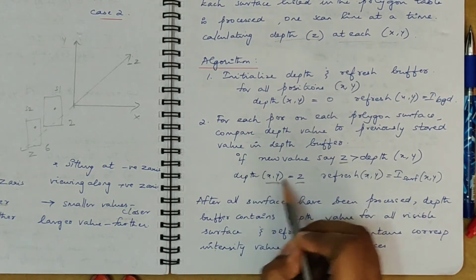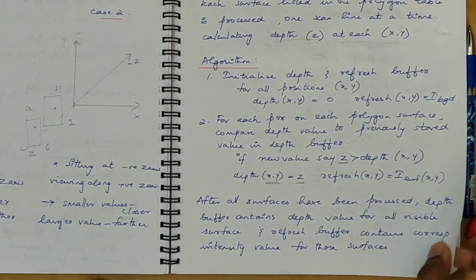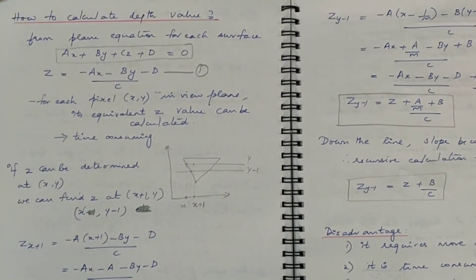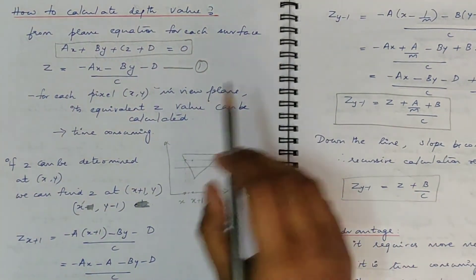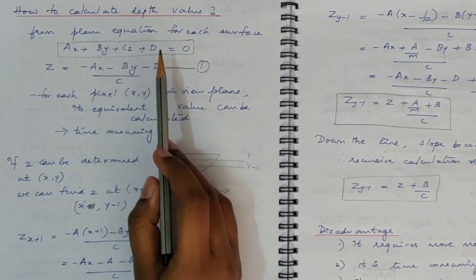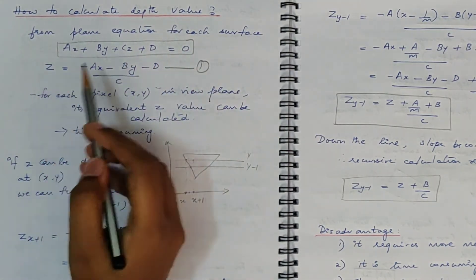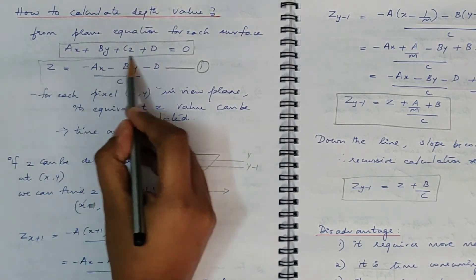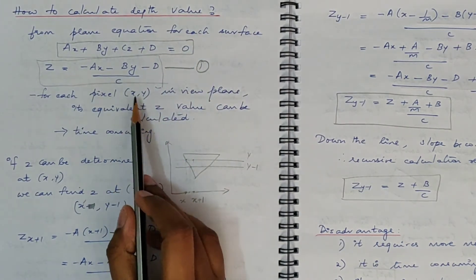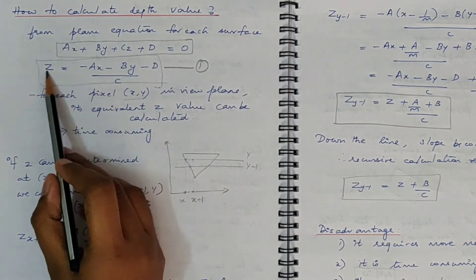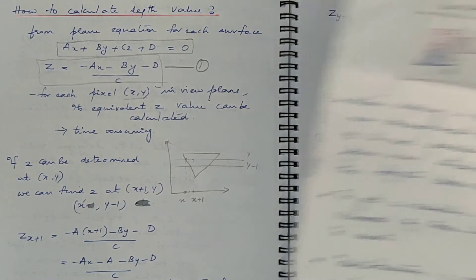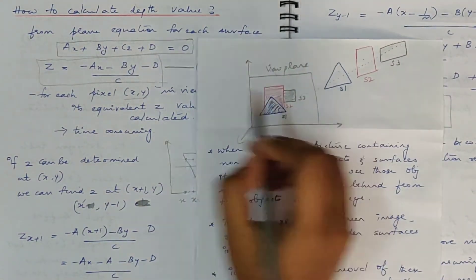Next we need to find out how to calculate the Z depth value. In order to calculate the depth value Z, we use the plane equation AX + BY + CZ + D = 0. Rearranging, Z can be calculated as Z = (−AX − BY − D) / C. For each pixel position XY in the view plane, its equivalent Z value can be calculated using this formula.